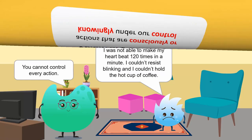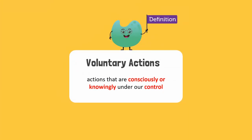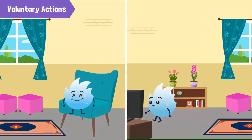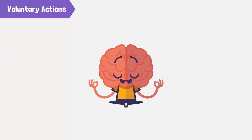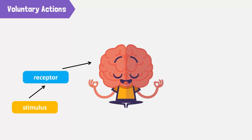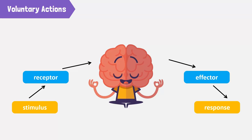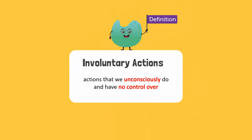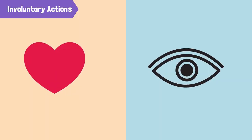You cannot control every action. The actions that you were consciously or knowingly able to do were under your control. These are called voluntary actions, such as sitting and running. In voluntary actions, the stimulus is carried directly to the brain or spinal cord through receptors. The brain processes the information and sends motor impulses to the specific effectors for the relevant controlled response. However, the actions that we unconsciously do and have no control over are involuntary actions.